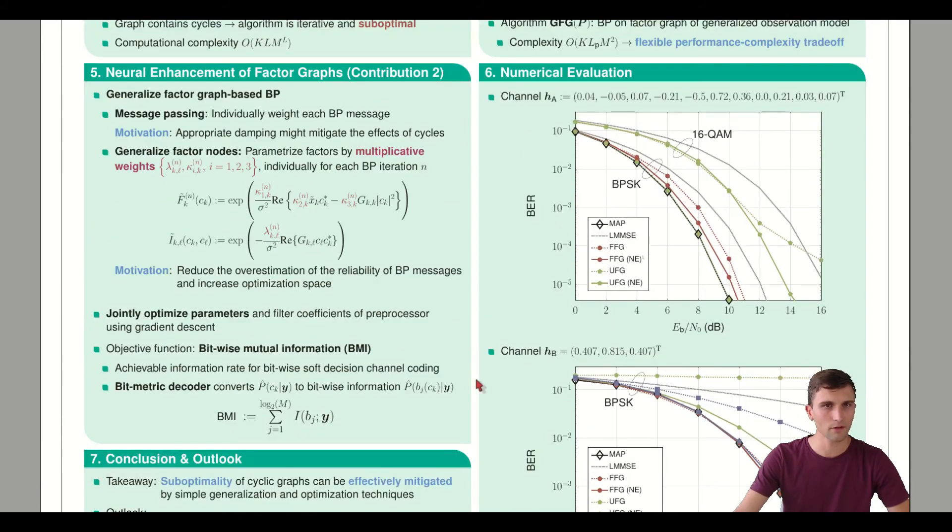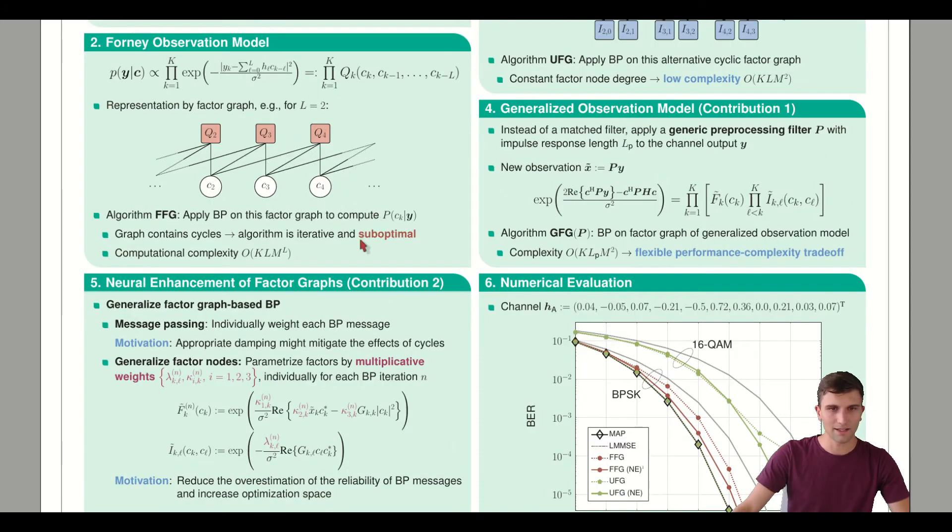But we still need to close this gap up to the MAP performance. Therefore we propose the second contribution: the neural enhancement of factor graphs. The idea is that we introduce parameters within the messages and factor nodes which we optimize to improve overall performance. First we tackle the message passing. We can individually weight each belief propagation message. By appropriate damping of messages, we might mitigate the effect of cycles.